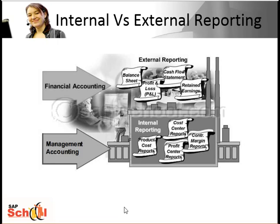However, the data can be presented differently to satisfy the different requirements. FI reports include the Profit and Loss Statement and the Balance Sheet. Managerial Accounting reports can be structured individually, a common example being the plan versus actual cost comparison for a specific department.